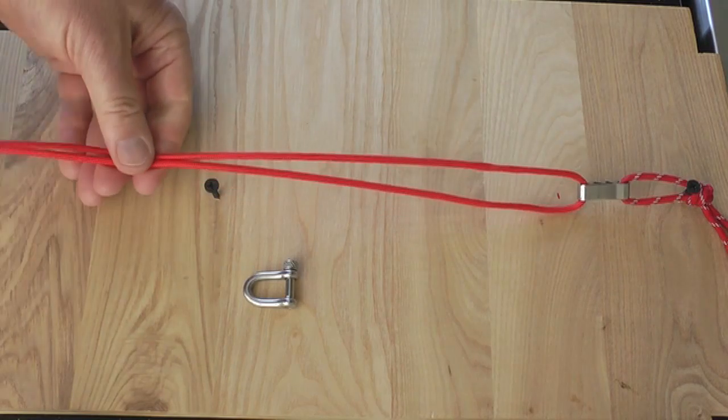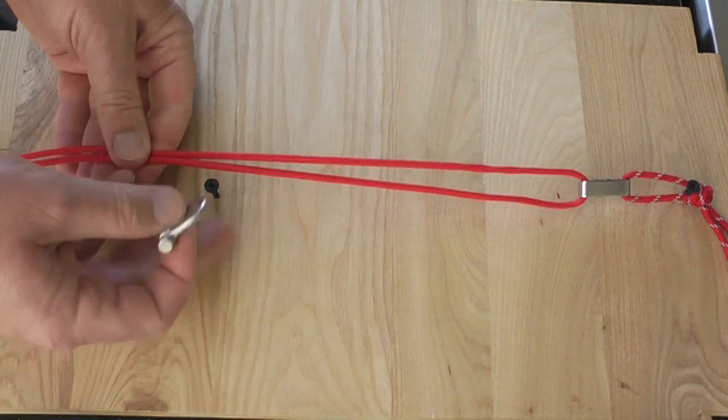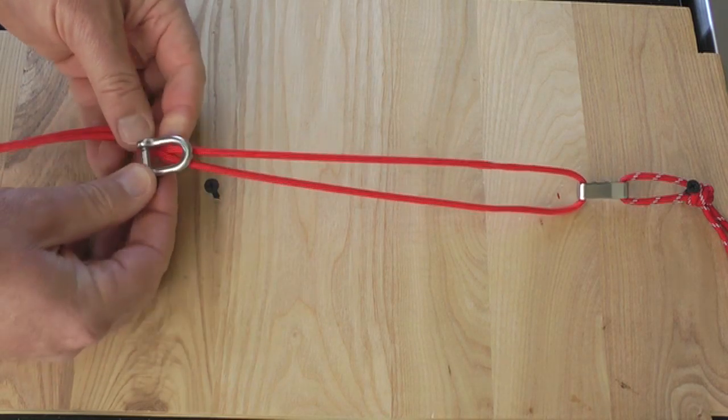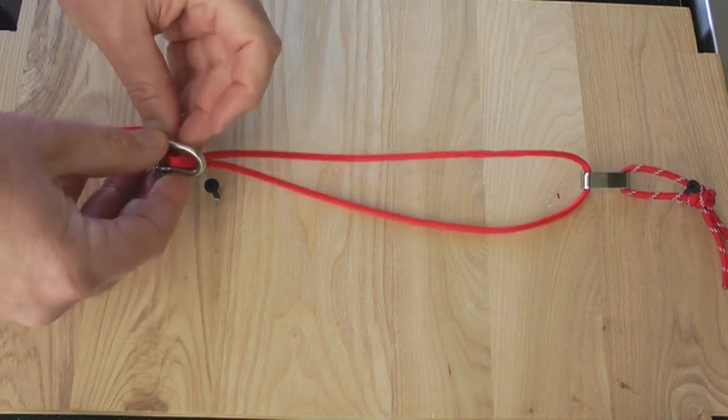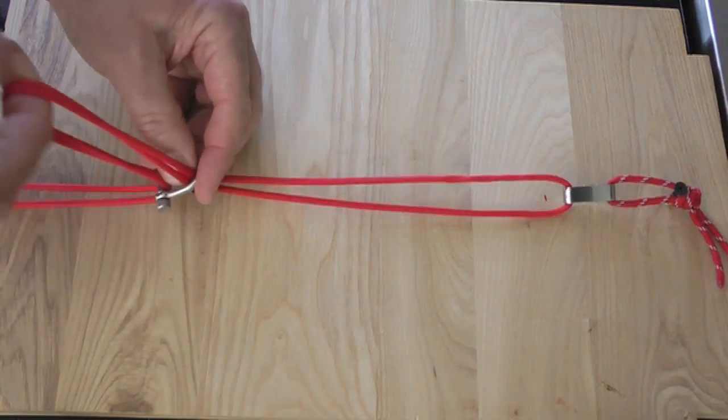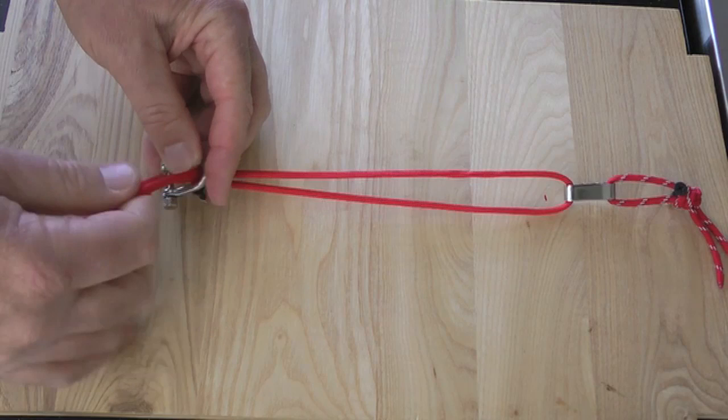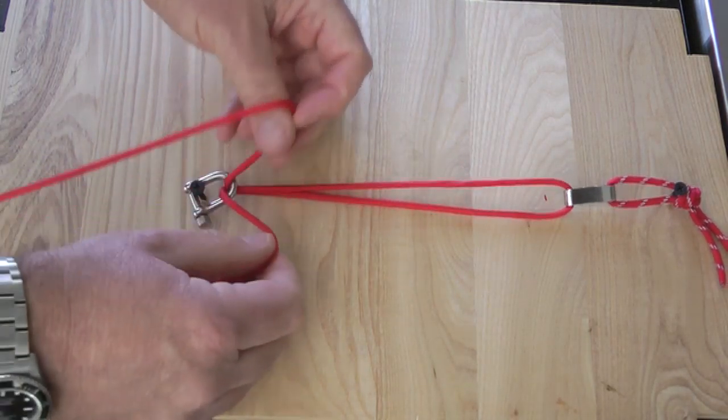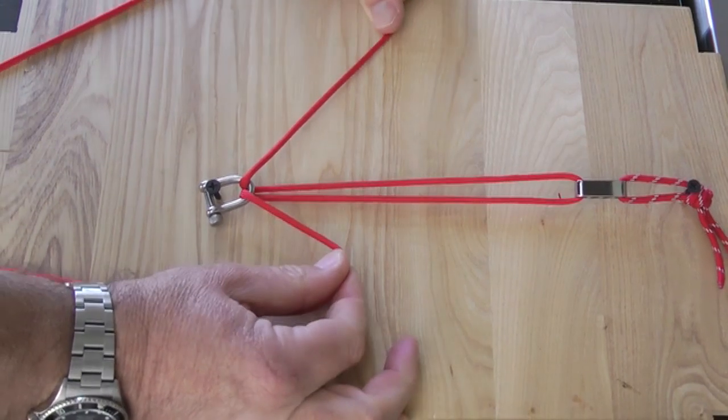With the other end of the paracord, I'm going to feed this through the O-ring and secure it onto here. So I just take the two pieces of paracord, feed them through there. Simple as that. And now that is secured to what I would call my rig, if you like.